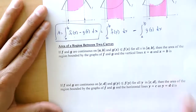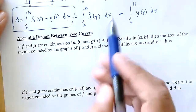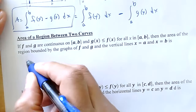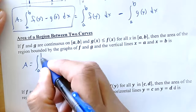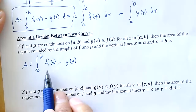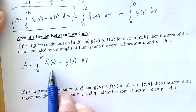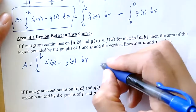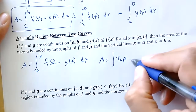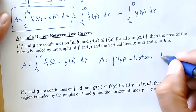We have to be careful: if g of x is less than or equal to f of x, I need to figure out which function is bigger and which is smaller so I subtract them correctly — bigger minus smaller. The way we read and write it is: the function on top minus the function on the bottom. I need to know which one is bigger and which is smaller with respect to x.